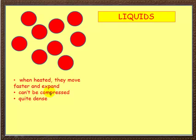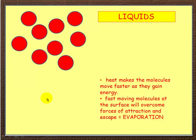Liquids generally can't be compressed. That's why they're very, very good for use in hydraulics. But they're still quite dense. Now, when you heat them, the heat makes the molecules move faster, as they gain more and more energy and transfer that to kinetic energy. At the surface, the very fast-moving molecules will overcome the force of attraction, and they will eventually escape. And we call this escape evaporation.